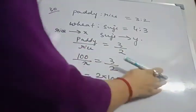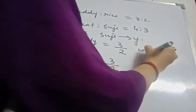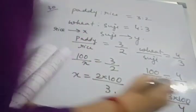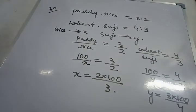Same thing if you find it for wheat and suji. Wheat by suji equals to 4 by 3. Wheat also 100 kg. Suji is y. We have taken it as y. So y equals to 3 into 100 by 4. We get on cross multiplication. Now next we are going to take the ratio of x and y.